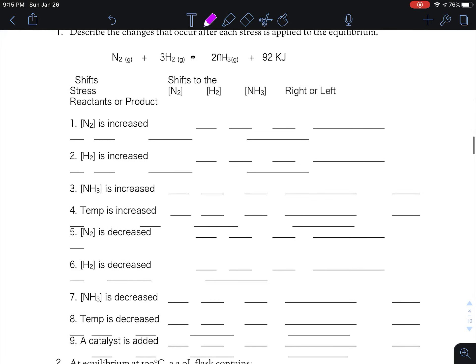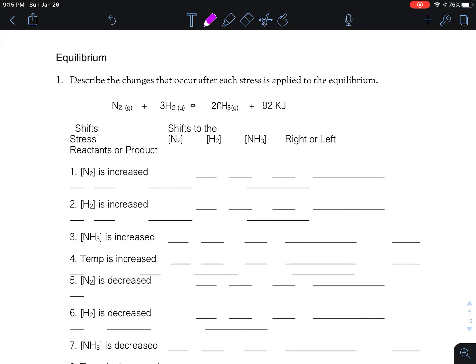Oh boy, this one did not come out nice. I apologize for this transfer. Hopefully it printed nicely for you. So describe the changes that occur after each stress is applied to the equilibrium. And I'm supposed to be looking for this value, these are the first three, and then is it shifting left or right? So if you increase the amount of N2, then the result will be that H2 is going to go down and NH3 will go up because this is NH3. There's a weird conversion that happened here as I transferred it from data. And so the shift is to the right.